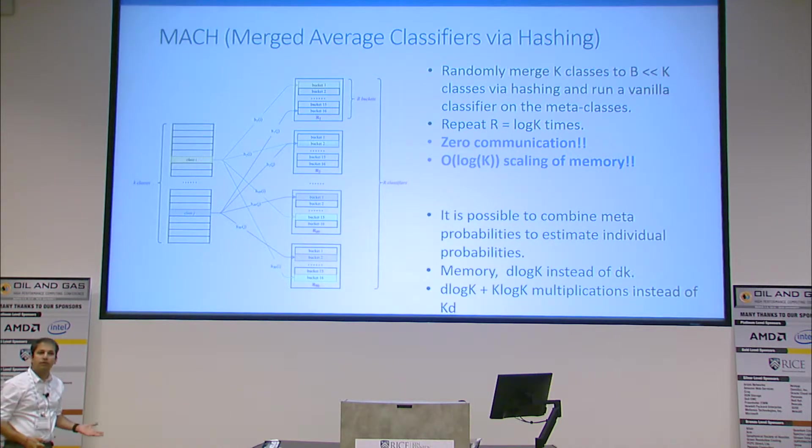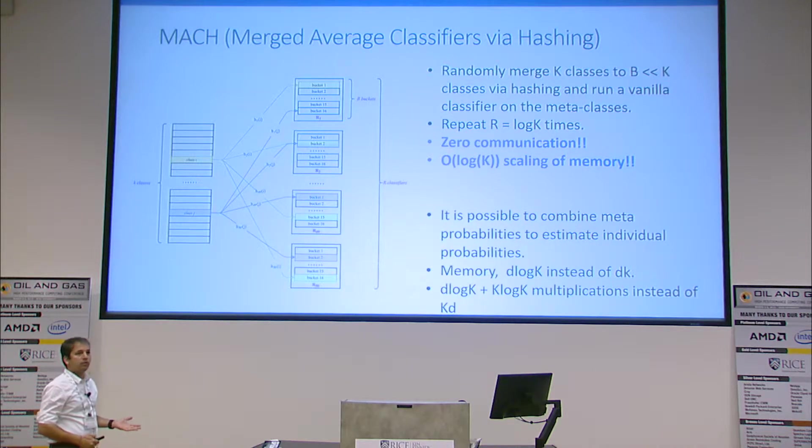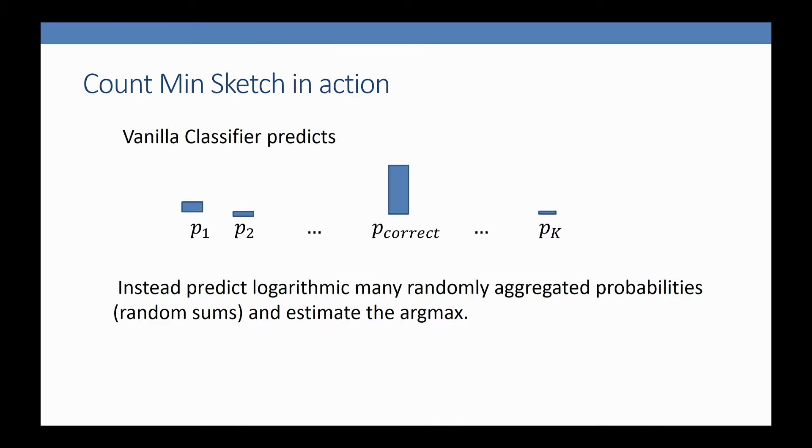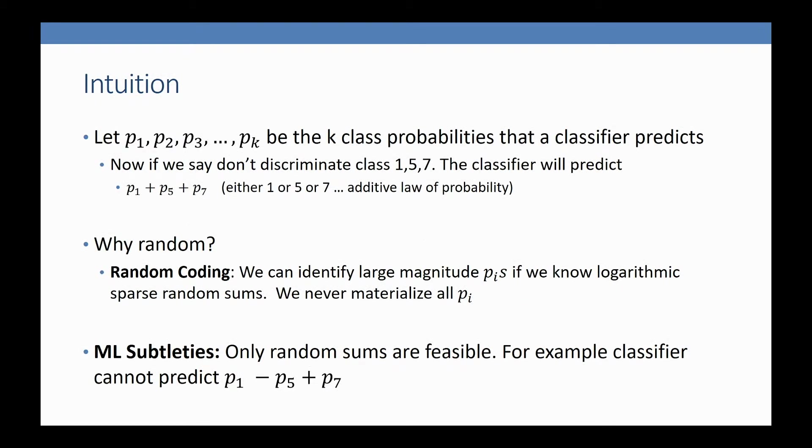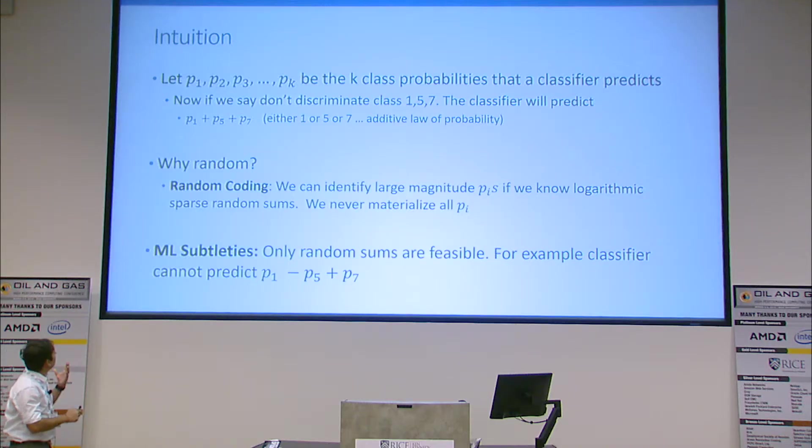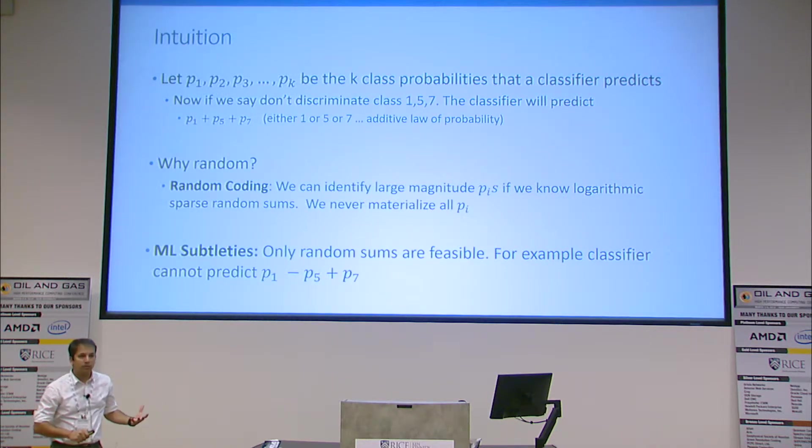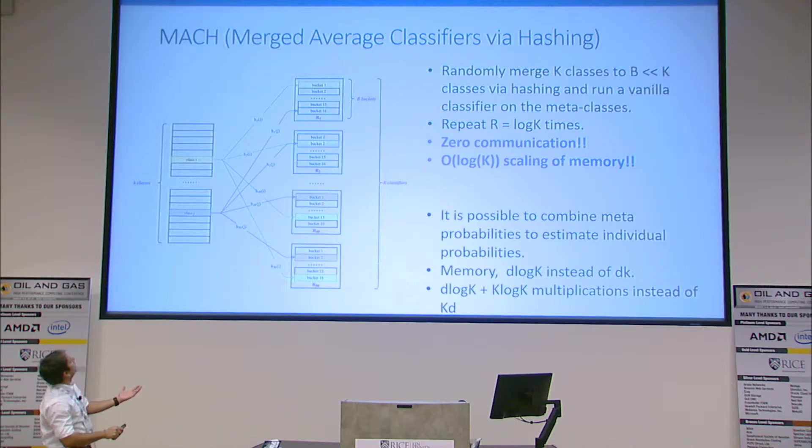If there's a way to come back, there's a way to reduce memory to something much less. These classifiers don't have to talk with each other. This is where coding and random decoding theory comes in—that's precisely the answer. A vanilla classifier predicts a probability to every class, and the correct class gets very high probability. What I'm arguing is basic random coding theory: we can identify large magnitude probabilities if we know logarithmically many sparse random sums. We never materialize all these PIs.